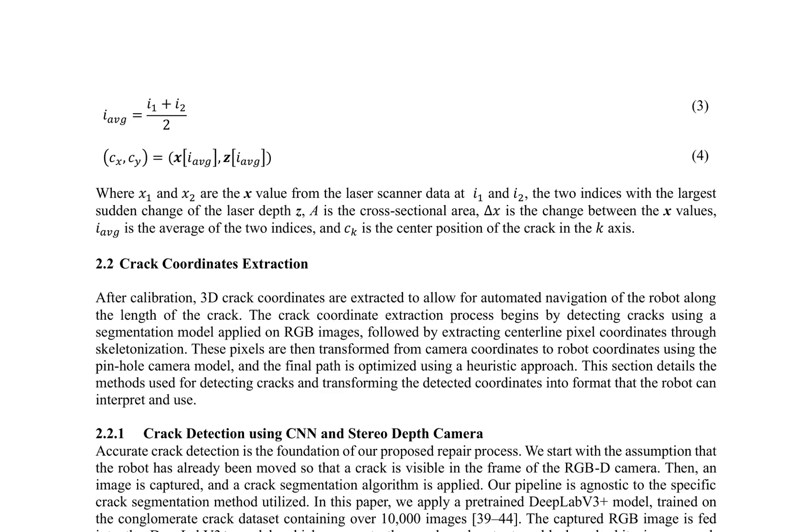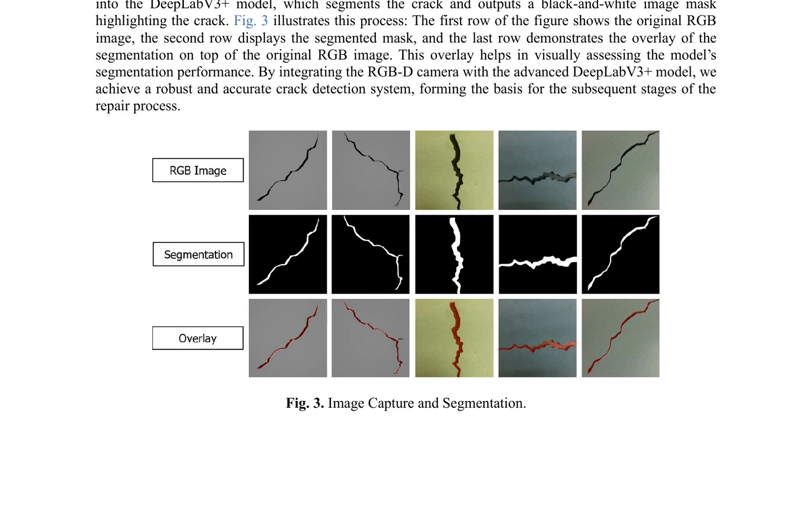The research paper presents a comprehensive method for crack detection and coordinate extraction in robotic repair systems. The method initiates with the calibration of laser scanner data, where sudden changes in laser depth Z are utilized to determine the cross-sectional area and center position of the crack, as represented by equations 3 and 4. The crack coordinates are then extracted through a segmentation model applied to RGB images, followed by skeletonization to obtain centerline pixel coordinates.